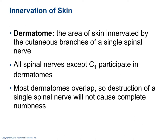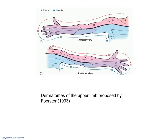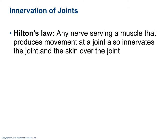A dermatome is an area of skin innervated by branches of a single spinal nerve. All spinal nerves have dermatomes except C1. Dermatomes overlap, so damage to one spinal nerve would not cause complete numbness of that area. Hilton's Law states that any nerve serving a muscle that produces movement at a joint also innervates the joint and the skin over the joint — for example, C5 controls sensation of the skin over the biceps and also controls the biceps muscle.